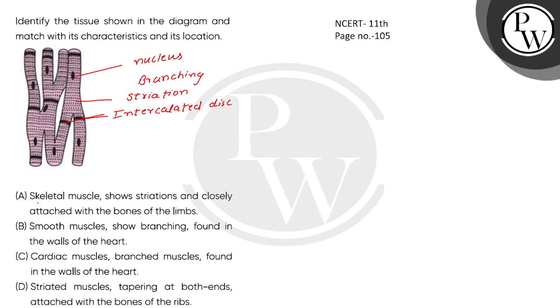Okay, now let's see here. This is a skeletal muscle - shows striations and closely attached with the bones of the limbs. This is incorrect. This is a skeletal muscle which is not branching, but there is branching, so this is not the skeletal muscle.